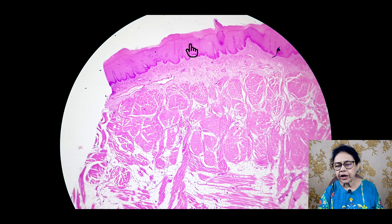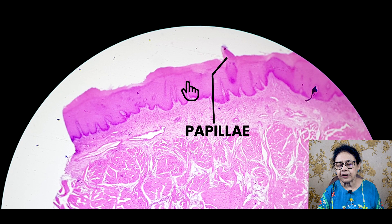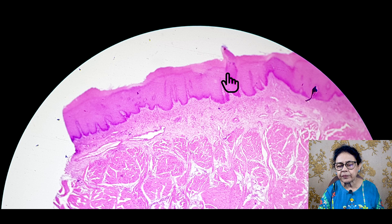Now why is it tongue? You should see that there is a papilla. Over the tongue there is a papilla you will see. This is the papilla which is known as the filiform papilla.